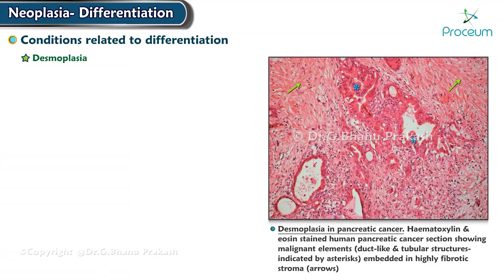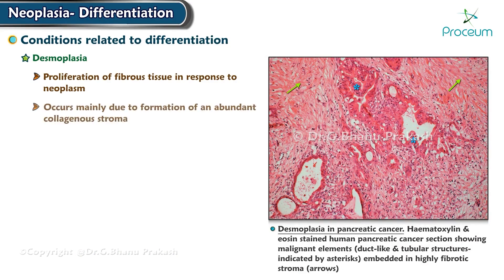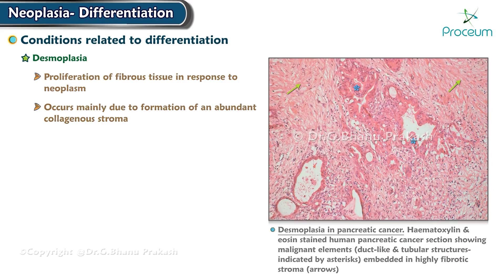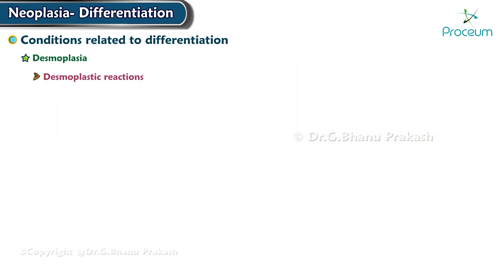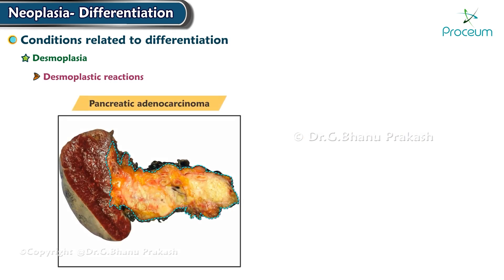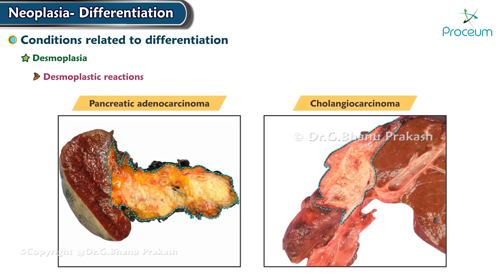Desmoplasia refers to proliferation of fibrous tissue in response to neoplasm. It occurs mainly due to formation of an abundant collagenous stroma. Desmoplastic reactions are seen in pancreatic adenocarcinoma and cholangiocarcinoma.